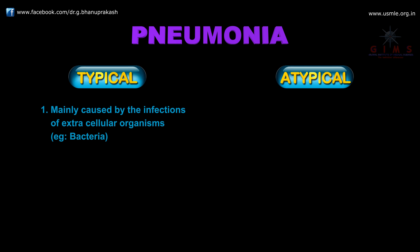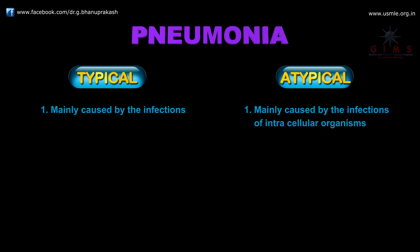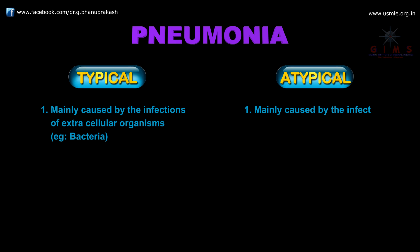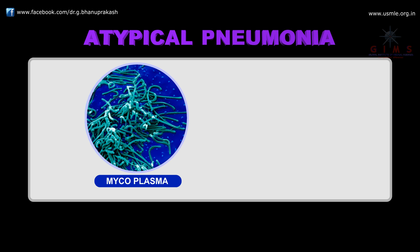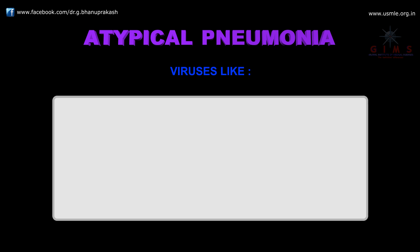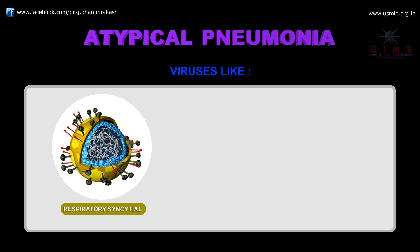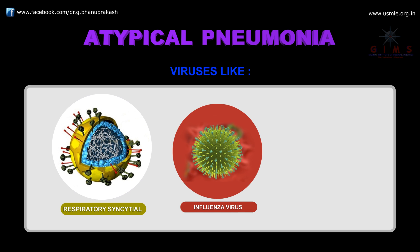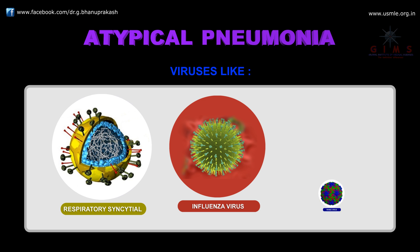On the other hand, atypical pneumonia is mainly caused by intracellular organisms. While typical pneumonia is caused by extracellular organisms, atypical pneumonia is caused by intracellular organisms like Mycoplasma, Chlamydia pneumoniae, and viruses such as respiratory syncytial virus, influenza virus, and rhinovirus.